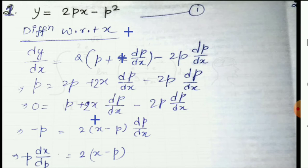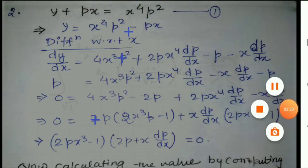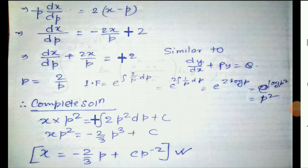We move the p term to the left-hand side, giving 2 = 2(x − p)·dp/dx. Sending dx/dp to the left-hand side: −p·dx/dp = 2x − p. Multiplying both sides by −1/p, we get dx/dp = −2x/p + 1. With the sign correction, this becomes a linear differential equation of the form dx/dp + (2/p)x = 1.